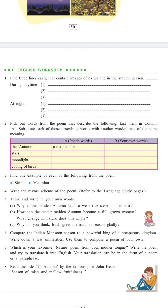Question number 6: Compare the Indian monsoon season to a powerful king of a prosperous kingdom. Write a few similarities. Use them to compose a poem of your own. Bharat ke barish ke season ko ek powerful, ek shakti shali raja se compare karo jis ke paas bahot dhan ho. Aur uske bish mein similarity dhundho. Kya kya donoh mein common hain aur uske basis mein poem likhna hai.